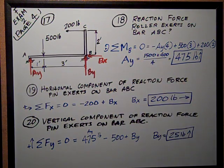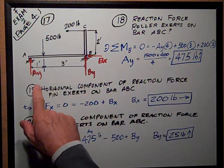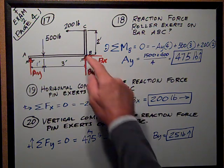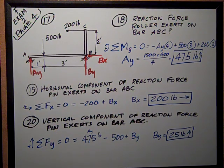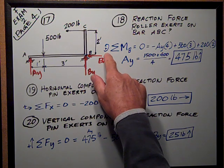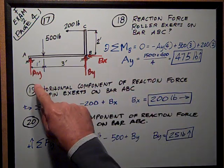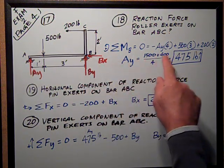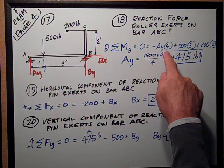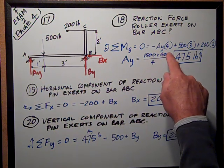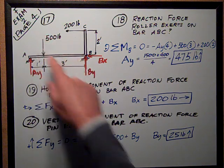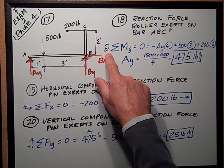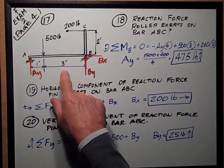Number 18, what's the reaction force that the roller exerts on bar ABC? The roller is here at A, so we sum moments about B, which is zero. I've assumed counterclockwise positive. So I have negative AY, because that's going clockwise rotation about point B, times its moment arm of 1 plus 3 or 4. Negative AY times 4 plus 500 pounds force, which is going counterclockwise, which is positive by my sign assumption, times its moment arm of 3.